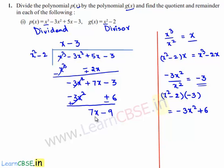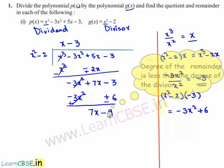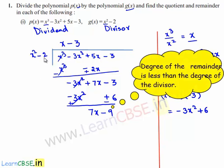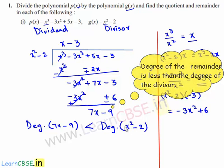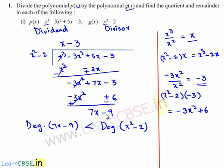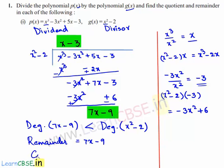Now this is 7x minus 9 and this is x square minus 2. The degree of 7x minus 9 is less than the degree of the divisor which is x square minus 2. So we need to stop the division here. The remainder becomes 7x minus 9 and the quotient is x minus 3.